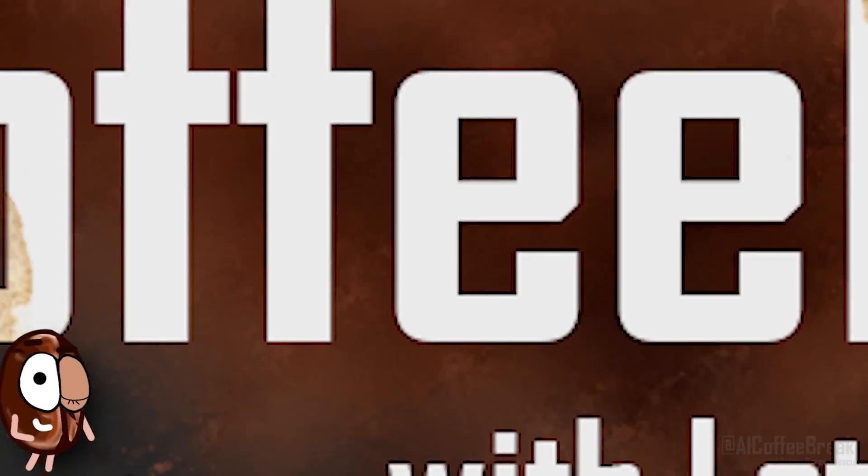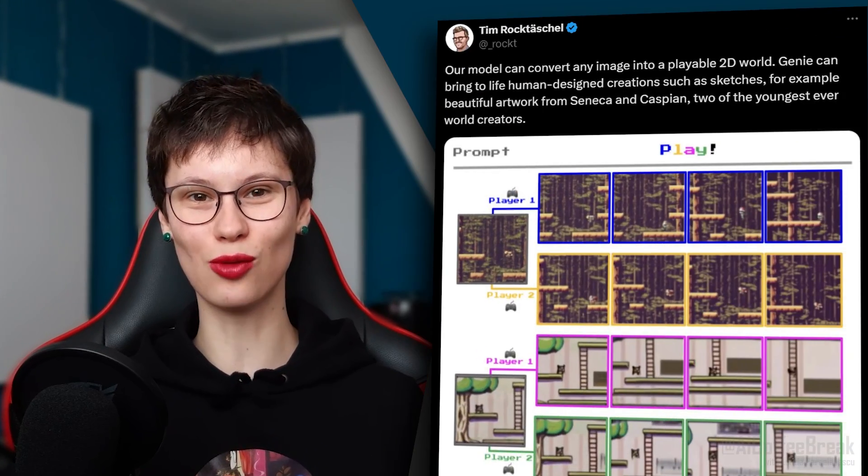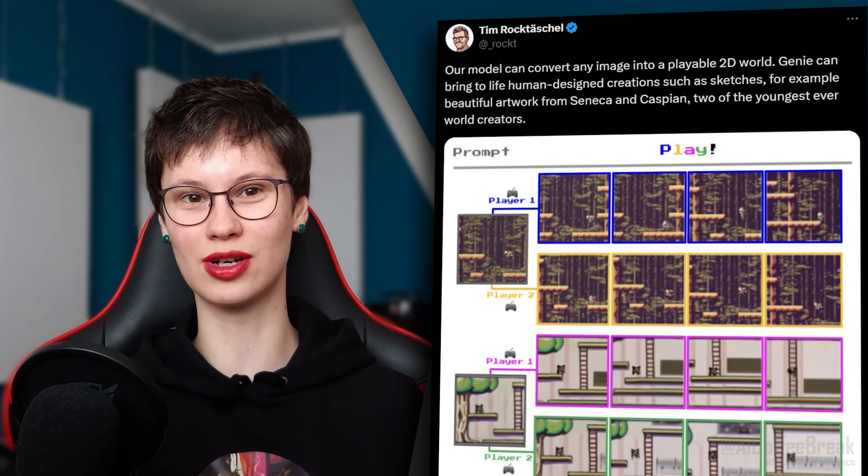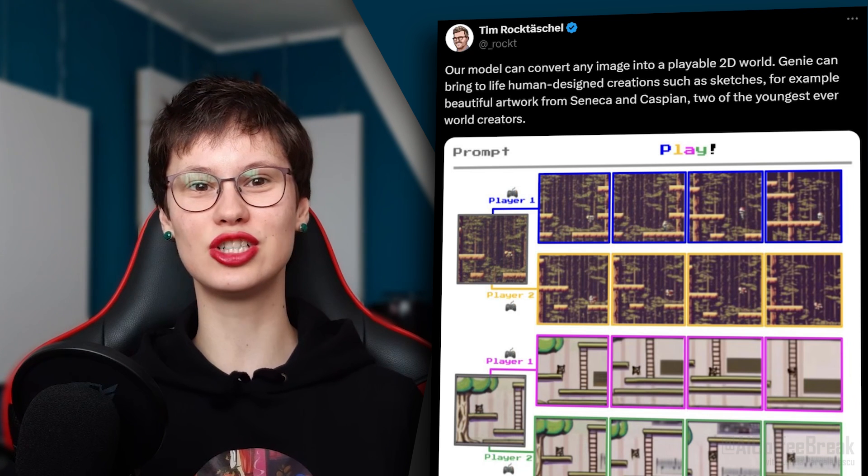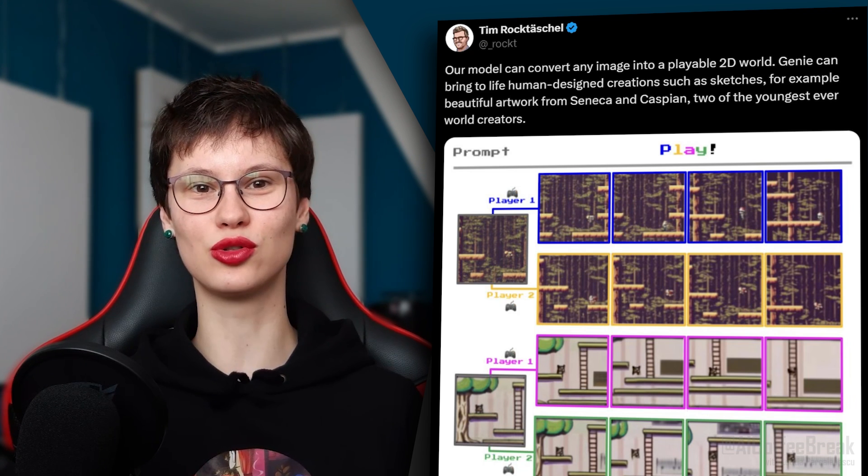Imagine this: you take a real world photo or hand draw a sketch or use text to image generation to produce an image, and the Genie model will do its magic and produce real time frames that correspond to your movement.